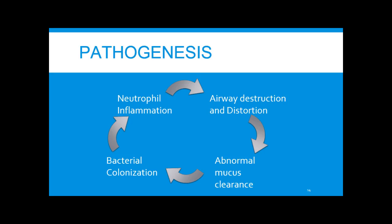The overall result is a vicious cycle that's been well described. Regardless of the underlying cause, the end pathway seems to be about the same: neutrophil inflammation results in airway destruction, increased or abnormal mucus clearance, and bacterial colonization, which then perpetuates the cycle again.